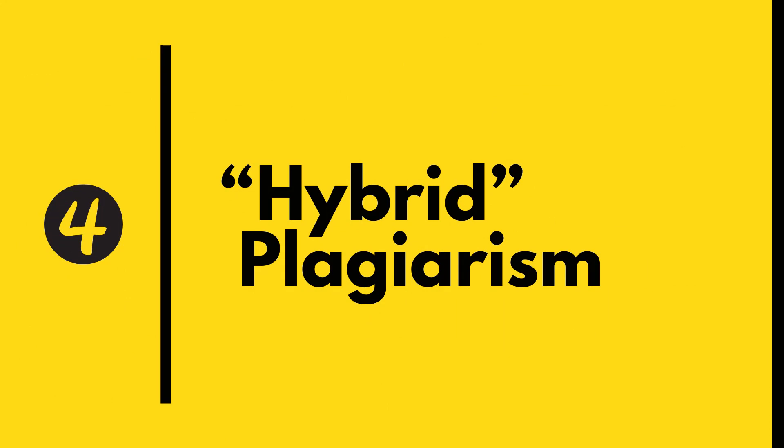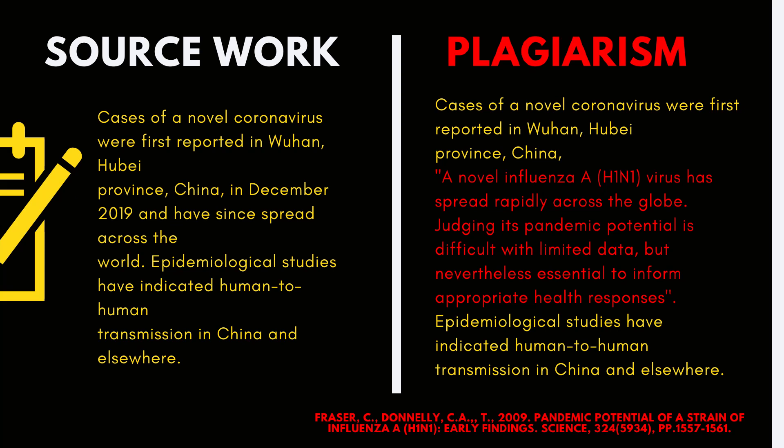Hybrid plagiarism is the fourth type of plagiarism, which happens when perfectly cited source documents are copied and arranged as a new document without citation. It usually occurs when one person combines perfectly cited sources with copied passages without citation. It is plagiarism that occurs due to improper in-text citation. In most cases, this plagiarism occurs in a properly written body of work but with poor referencing.